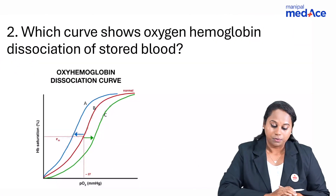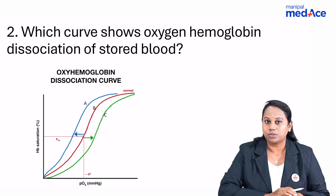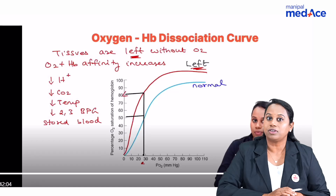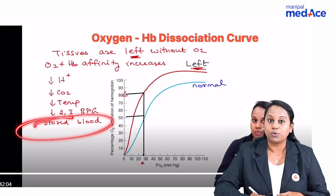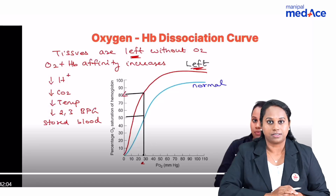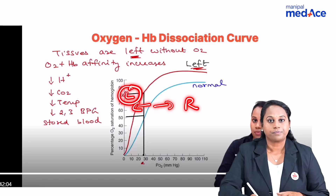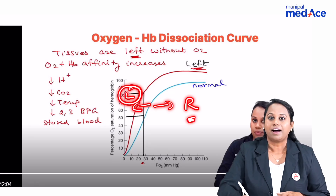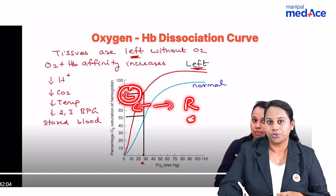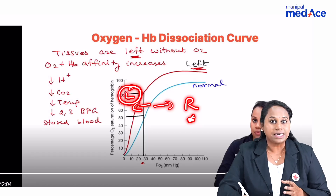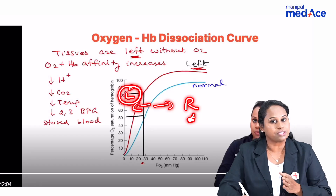Question number two: which curve shows oxygen-hemoglobin dissociation of stored blood? We have discussed this in our Manipal Medes app physiology videos. The oxygen-hemoglobin dissociation curve can show a right shift or a left shift. Right shift means release of oxygen to tissues — conditions like hypoxia, increase in H+, CO2, temperature, 2,3-BPG, or exercise cause a right shift.